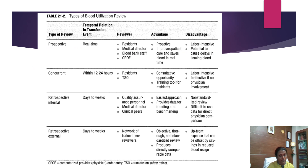This is a comparison of all the audits mentioned. Prospective audit is a real-time audit; the reviewer is a resident, medical director, advanced staff, or computerized system. The advantage is that it is proactive, improves patient care, and saves blood in real time. The disadvantage is that it is labor-intensive with potential to cause delay in issuing blood. Concurrent audit occurs within 12 to 24 hours of issuing the blood; the reviewer is a resident or transfusion service officer. It is a consultative opportunity and can act as a training tool for residents. The disadvantage is that it is labor-intensive and ineffective if there is no physician involvement.